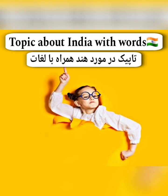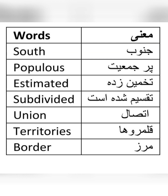Topic about India. Words related to the topic: meaning — tajjuma; south — junub; populous — jamiat; estimated — tachminzada; subdivided — taqsim shudas; union; border — marz ya sarhat.